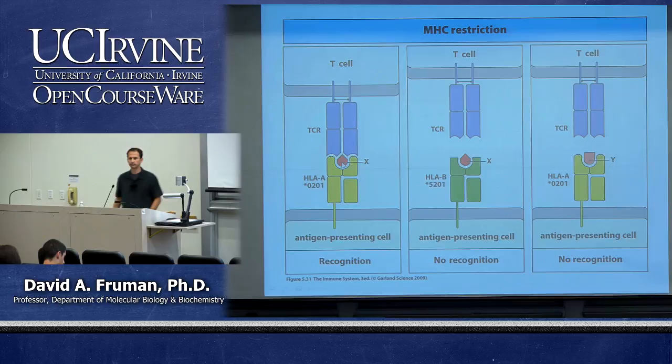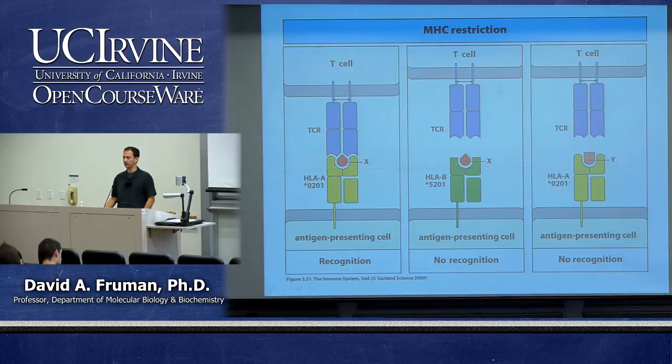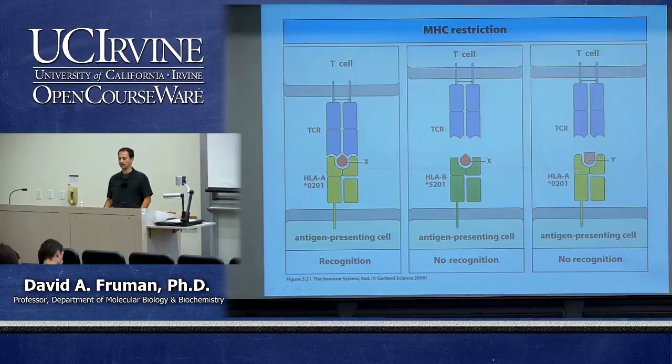MHC restriction is the same for class 1 and class 2, and for CD8 and CD4 T cells — all T cell recognition of peptides is MHC restricted. It's restricted to specific alleles and specific members of the gene family. For any one particular T cell that forms a good fit with an MHC-peptide complex, it will not form a good fit with the same peptide in a different MHC, or the same MHC with a different peptide.